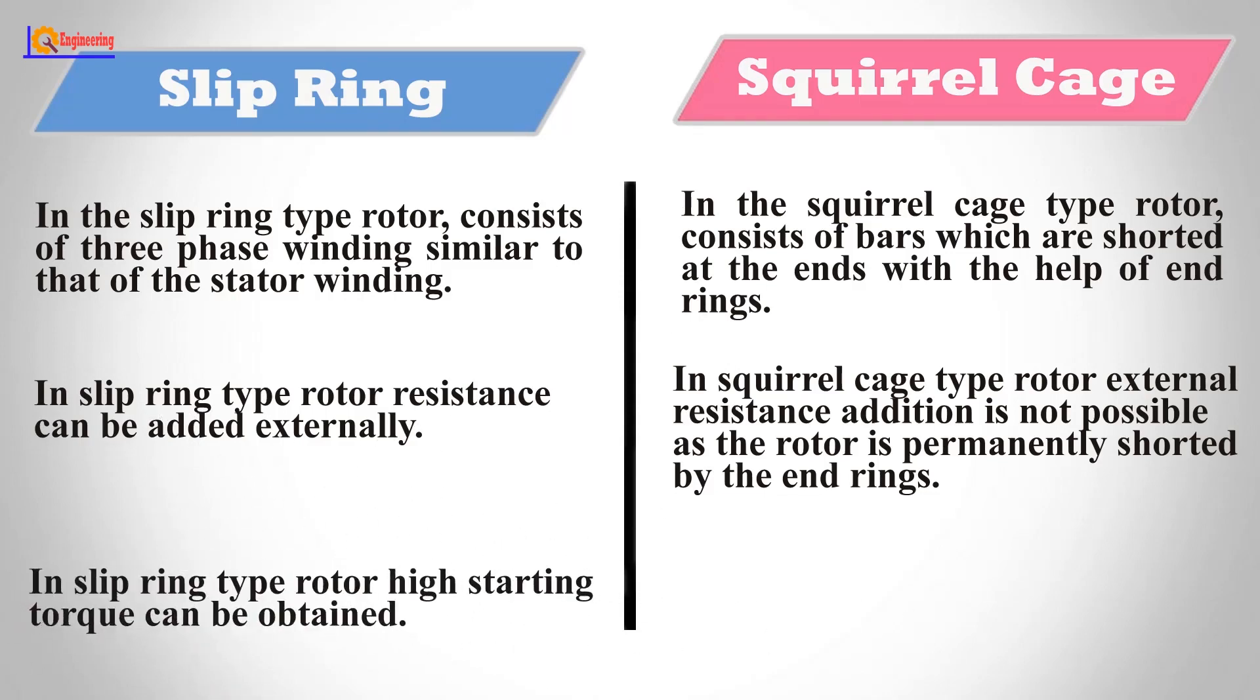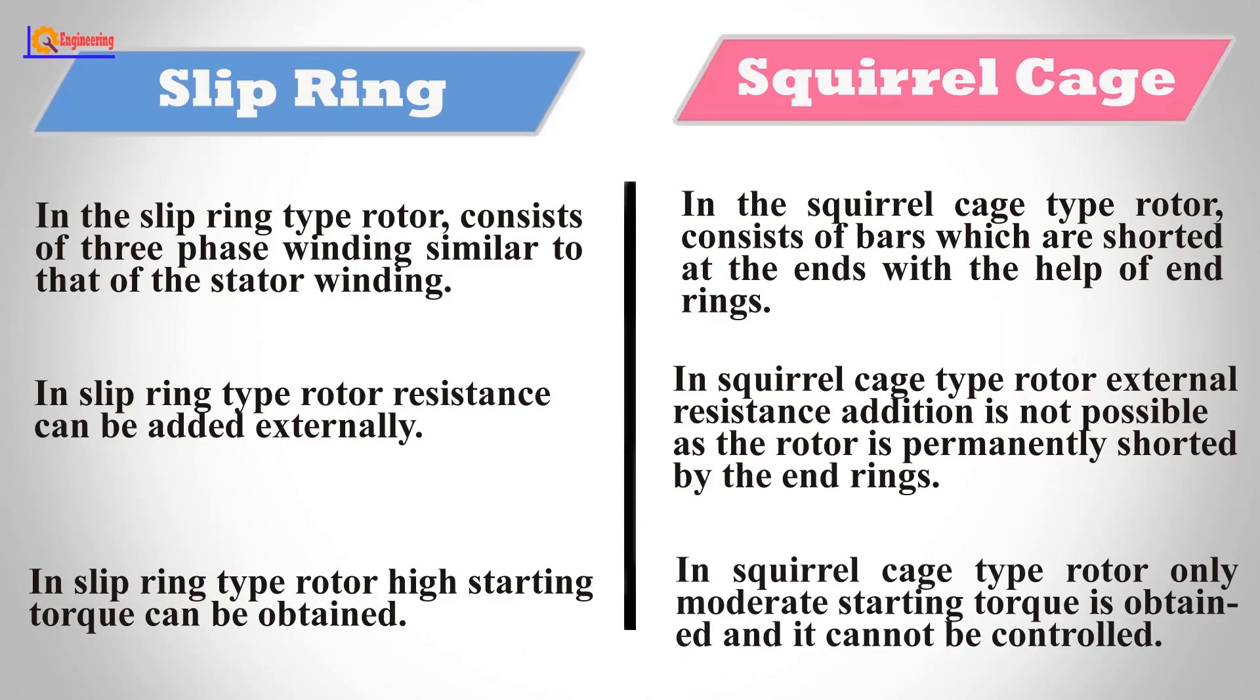In slip ring type rotor, high starting torque can be obtained. In squirrel cage type rotor, only moderate starting torque is obtained and it cannot be controlled.